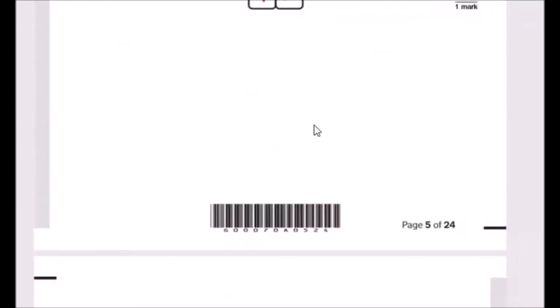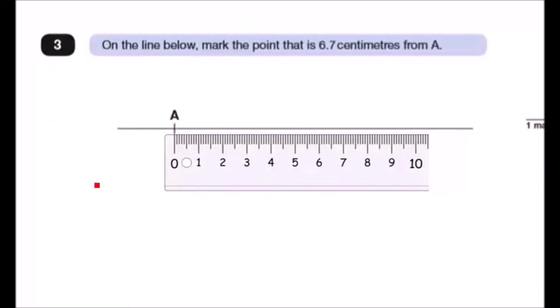Okay, question for you guys. So this one I already cropped out to another page because we actually need to use a ruler for this one. So let's have a look. On the line below, mark the point that is 6.7 centimeters from A. So over here. What I did here, and what I recommend you guys to do, is to always get a nice ruler which says centimeters in it. So make sure it says cm, okay?